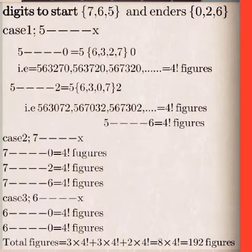Case 3: 6 can start, but remember 6 was also ending as an even digit. So if 6 starts, we'll be ending with only 2 even numbers—that is 0 and 2 only.